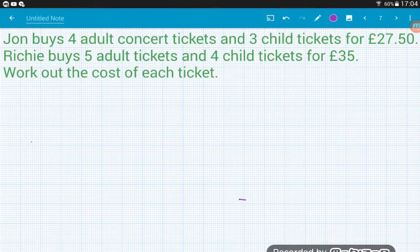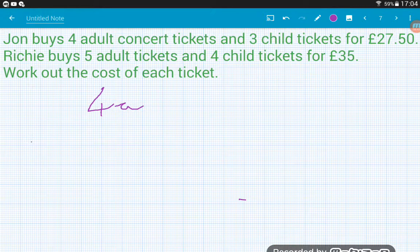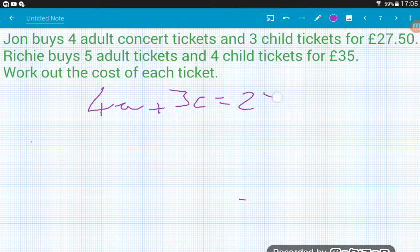We're going to go through one more. So John buys four adult concert tickets and three child tickets for £27.50. Richie buys five adult tickets and four child tickets for £35. Work out the cost of each ticket. So first of all here, if anybody spots my little nod to my favourite band, well done Richie and John. So what we want to do here, we want to work out how much each ticket costs, an adult ticket and a child ticket. So here again, we need to turn each sentence into an equation. We need to decide what we're going to call an adult ticket and a child ticket. Now I think it'd be a good idea to call them A and C.